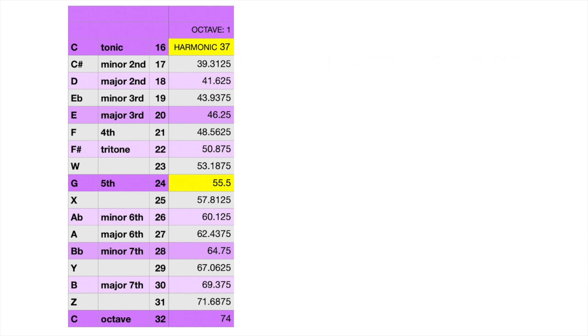To generate the next note's frequency, we'll multiply 37 by 17, the harmonic pertaining to the minor 2nd, and then divide that number by 16. For the major 2nd, we'll multiply by 18, then divide by 16, and so on down the line.